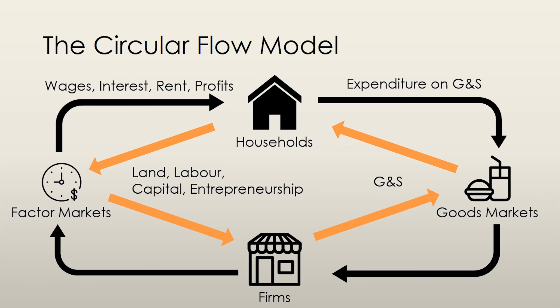From the diagram, it is clear that money simply flows from households and firms through the goods and factor markets. Goods and services flow from the firm to the household through the goods market, and economic resources flow from households to firms in factor markets.